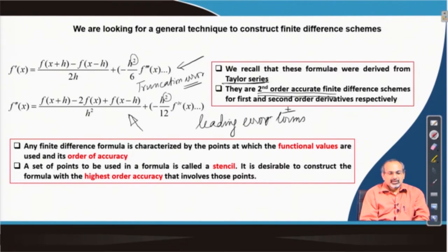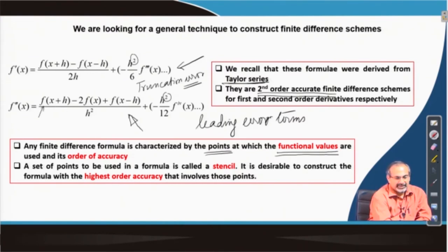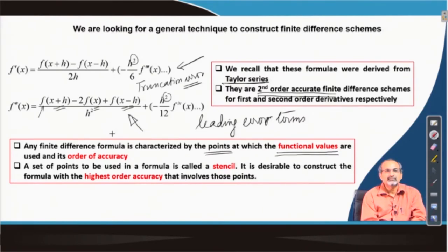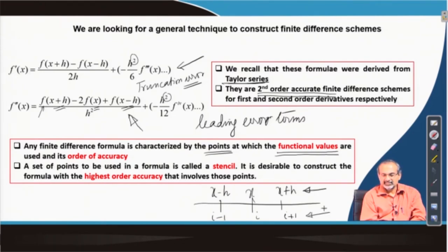If you look a little deeper into these equations, you find that these finite difference formulas are dependent on functional values at different points — x plus h, x, and x minus h. You are essentially invoking the functional values, meaning the value of f at those different grid points. If you have x, x plus h, and x minus h, we assign grid numbering to all these points in a finite difference scheme.